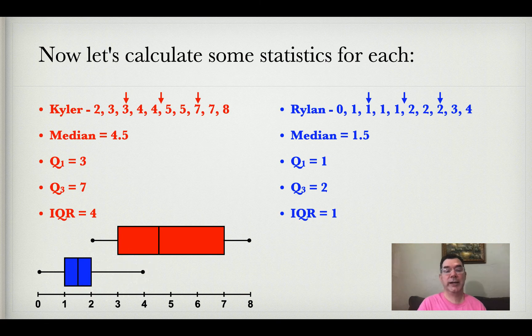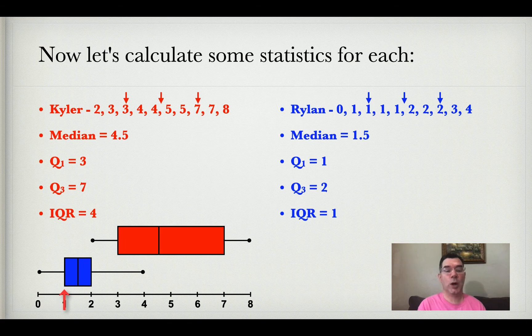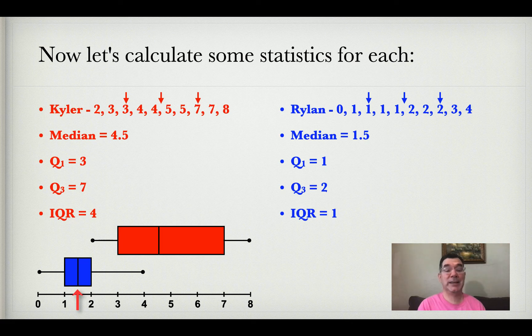Here is Rylan's box and whisker plot. The minimum of zero is represented by that dot on the left, the lower quartile of 1 is represented by the left edge of the box, and the median of 1.5 is represented by the line in the box.